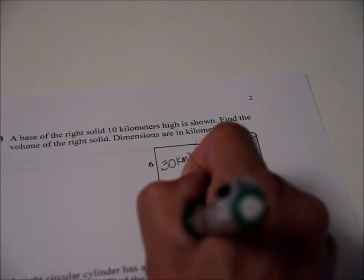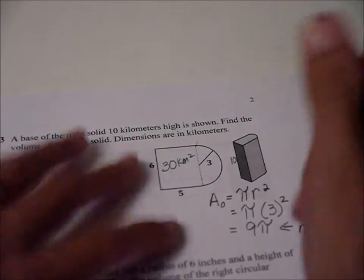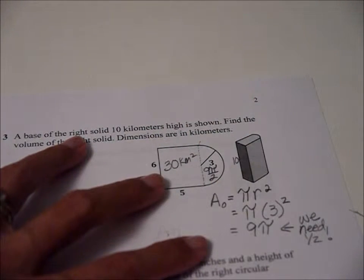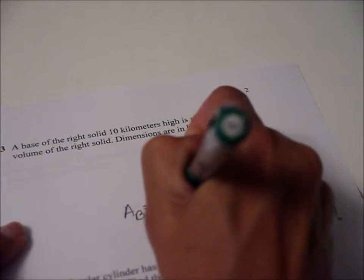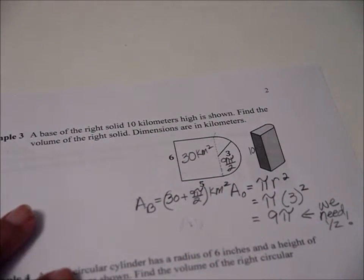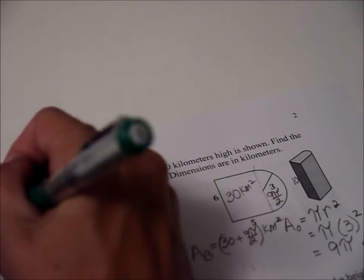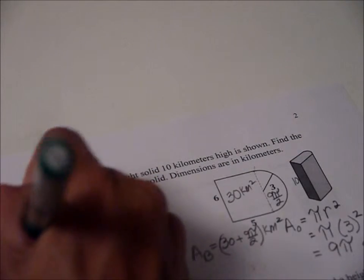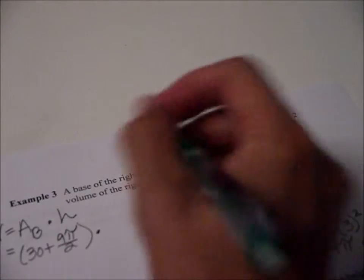So area of the semicircle, that looks like a D. Area of the semicircle is 9π over 2. So the total area of the base. Do you see where we got those? 9π over 2. All right, so volume equals area of base times height. Area of the base is, and then times the height is 10.